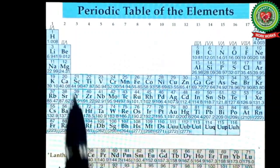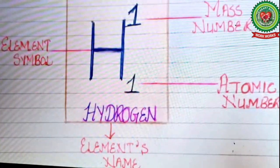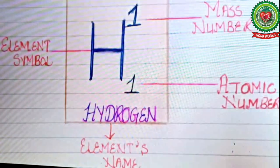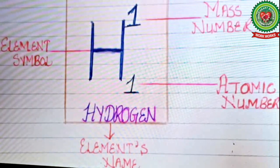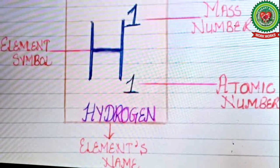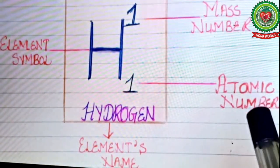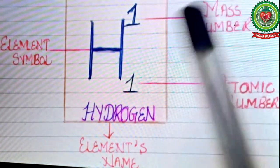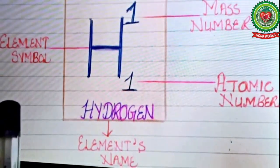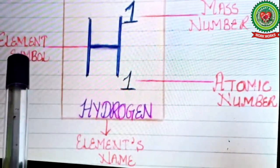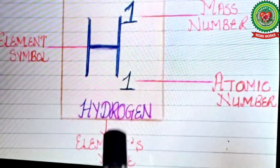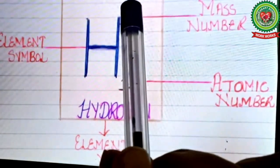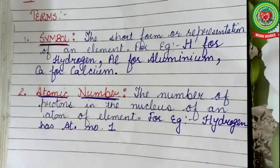Each element in the periodic table is kept in a small square box. Each box contains four things: first, the symbol of the element; second, the element's name; third, the element's atomic number, which means the number of protons; and fourth, the element's mass number, which means the total number of protons plus neutrons. For hydrogen, 'H' is the symbol, 'hydrogen' is the name, 1 is the atomic number, and the mass number is written at the top of the symbol.